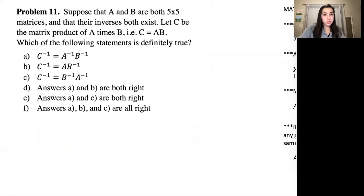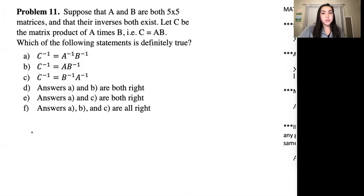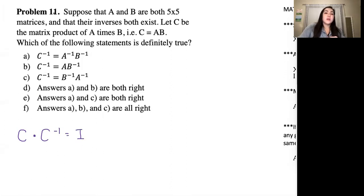Back to the problem — we'll start by testing option A. We probably want to use a fact that has C inverse in it as a testing method. One of the facts we had was that anything times its inverse equals the identity matrix, so we can write C times C inverse equals I. That is a mathematical fact. Another mathematical fact given in the problem is that C equals A times B, so I can plug in A times B for C.